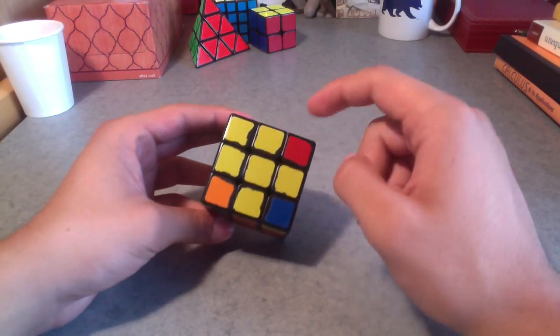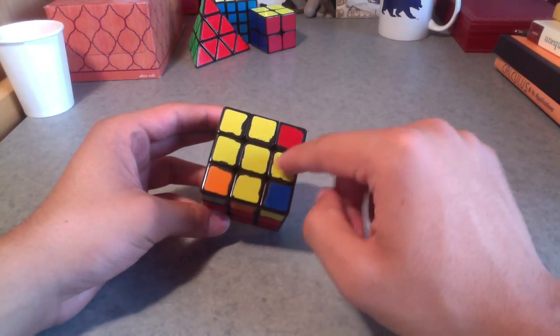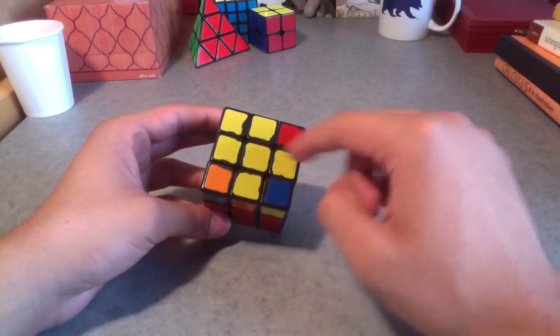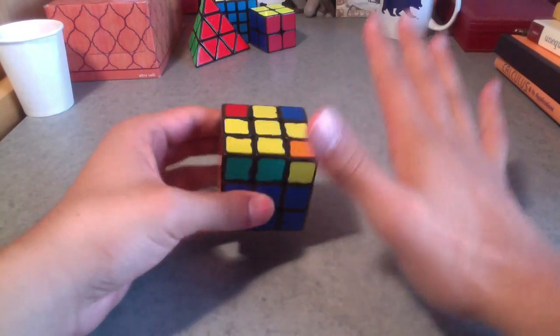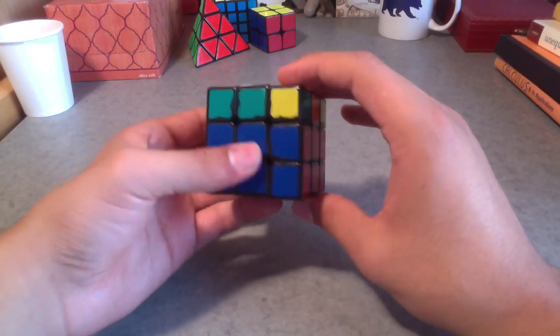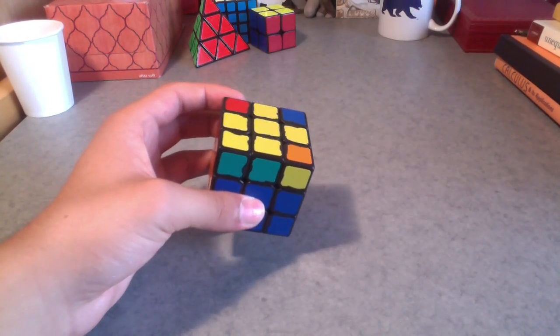So you see how, I'm sorry, you see how it looks like a fish here, and you have like these two, like a tail and like a head. So once you're at this fish shape, you can do this algorithm that I'll show you right now.